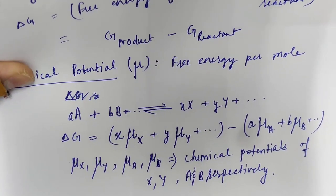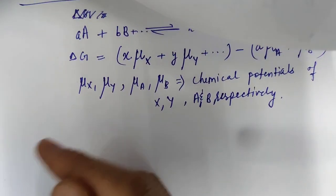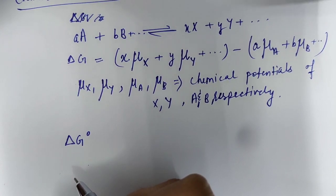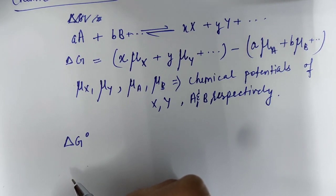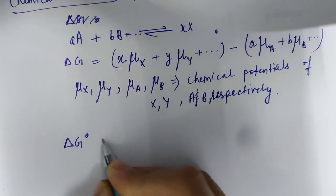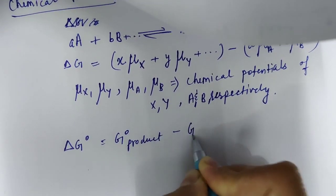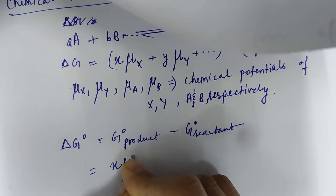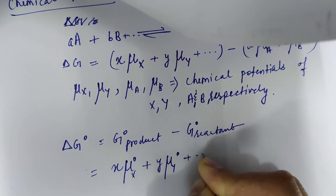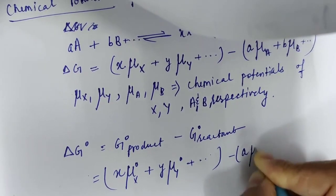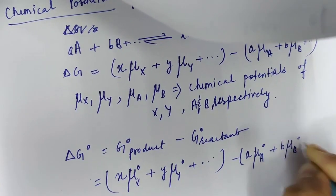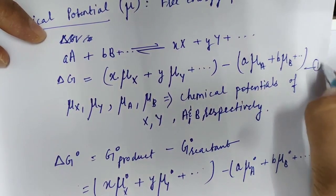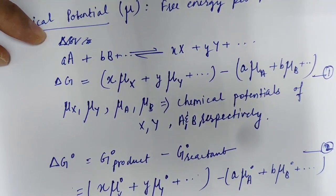Similarly, if we have standard chemical potential, standard Gibbs free energy is the Gibbs free energy of any reaction at standard temperature and pressure conditions, represented by Delta G naught equals G naught of product minus G naught of reactant. We can also represent it in terms of standard chemical potentials of products minus those of reactants. Let's call this our second equation.